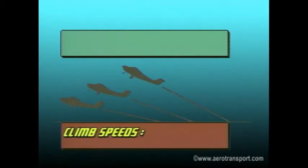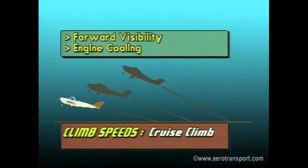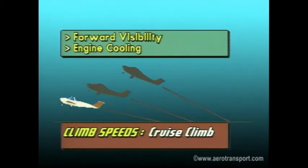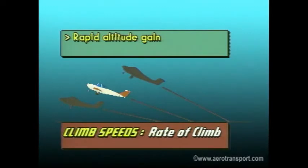One is the recommended normal climb speed. This is the speed you climb at under normal circumstances. It is higher than the best rate of climb and best angle of climb speeds. Its advantages are better forward visibility and adequate cooling for the engine. The recommended best rate of climb speed will give you the greatest gain in altitude in the shortest time. You would use this when you must reach a given altitude in the shortest possible time.